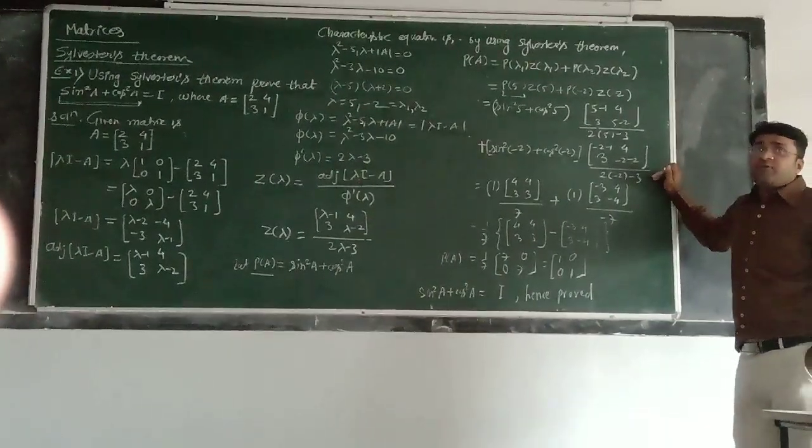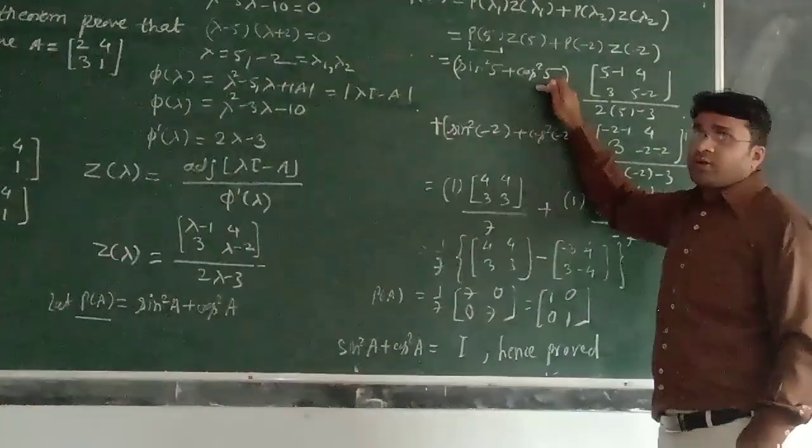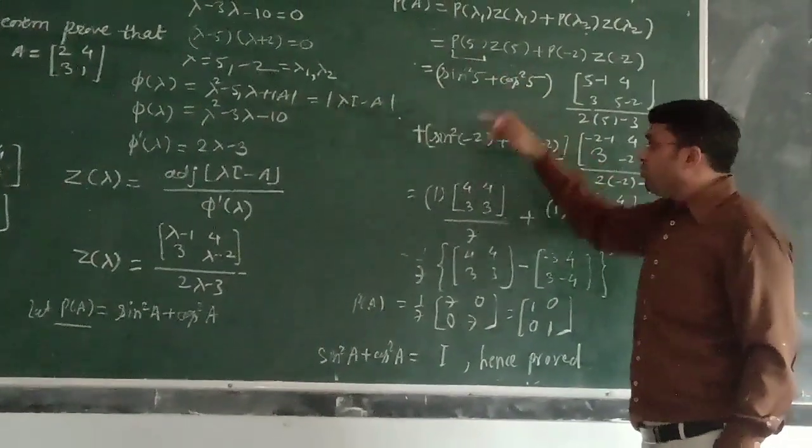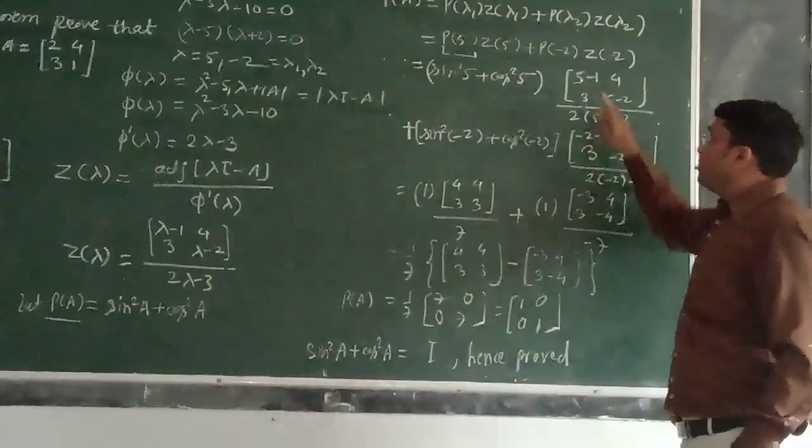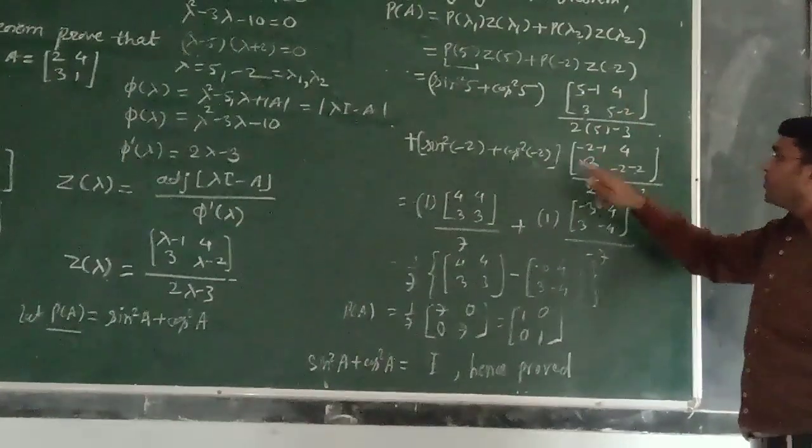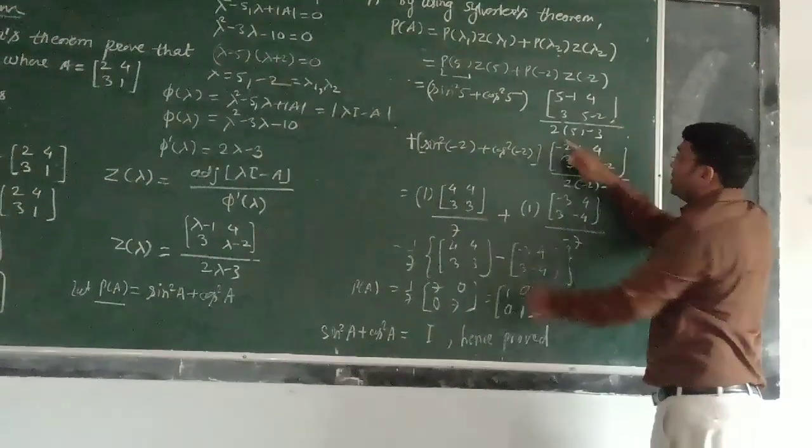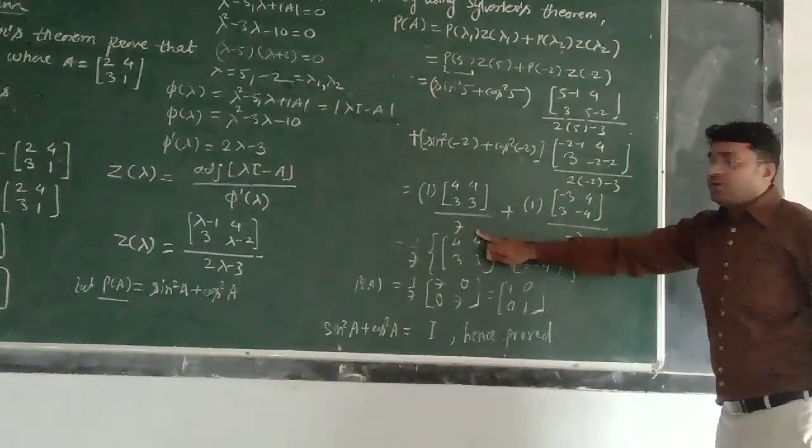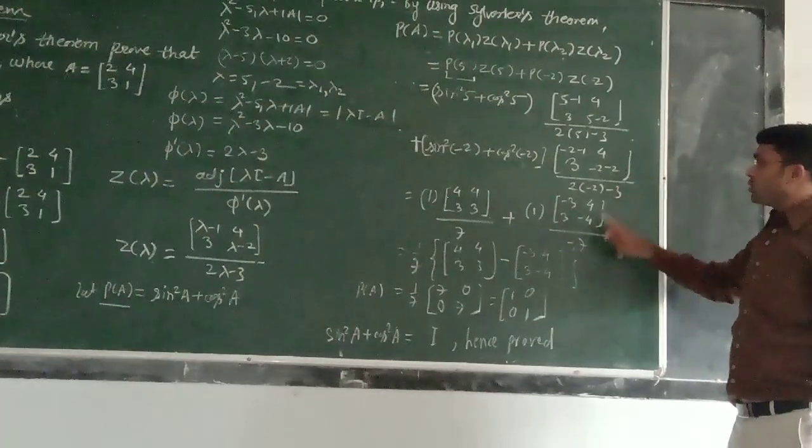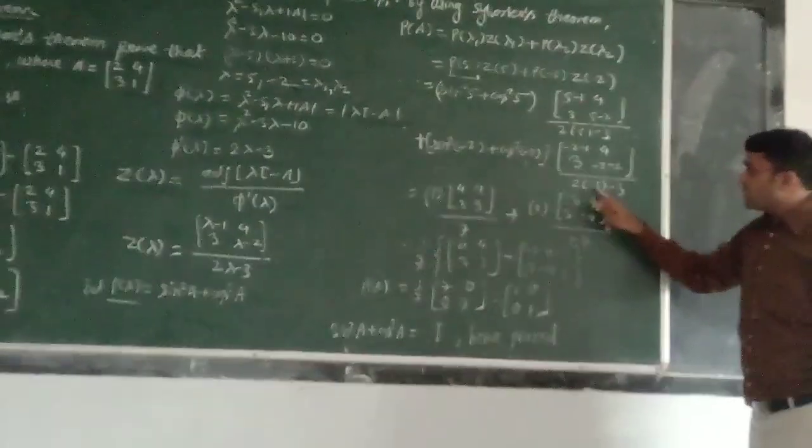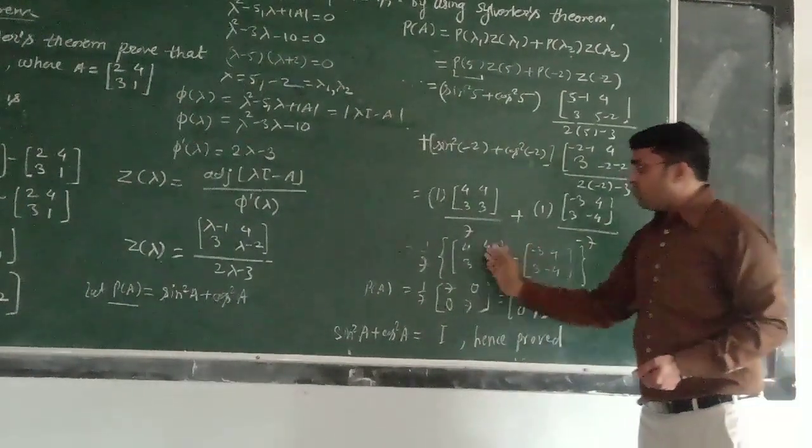Now, our simple job is that just to simplify this quantity. Simplify it. So, we know that sin square 5 plus cos square 5, 5 is a real number, so it will be 1. Similarly, sin square minus 2 plus cos square minus 2 is also 1. Simplify this, 5 minus 1 is 4. This is 4, 3. 5 minus 2 is 3. Then this is 10 minus 3, it is 7. Minus 2 minus 1 is minus 3. This is 4, 3. Minus 2 minus 2 is minus 4. Then this minus 4 minus 3 is minus 7.